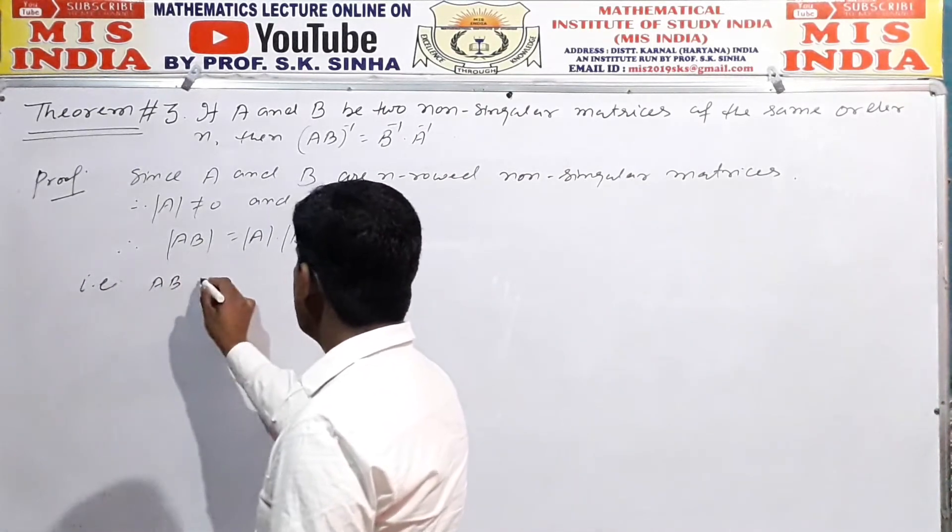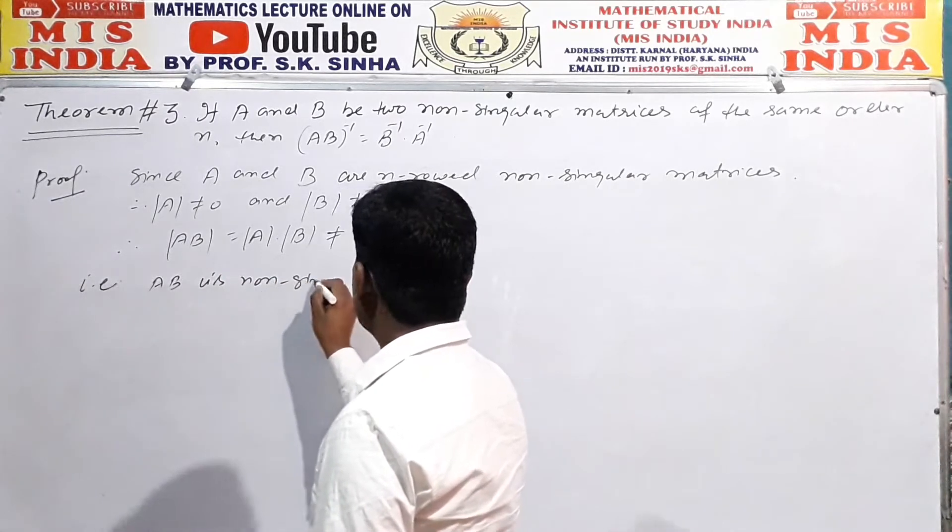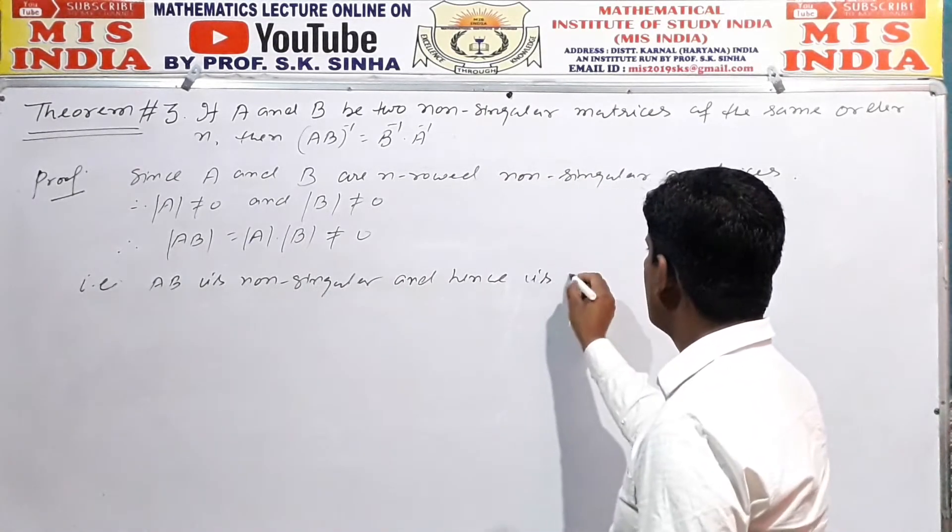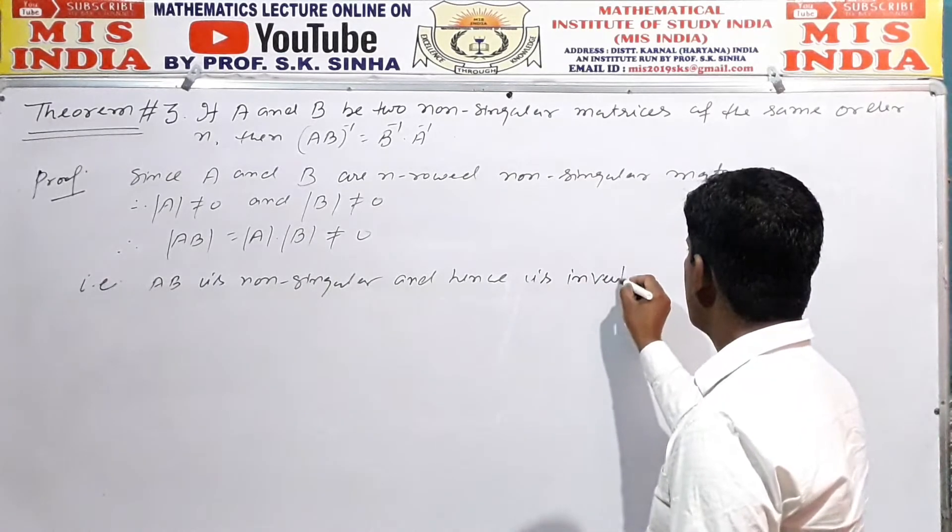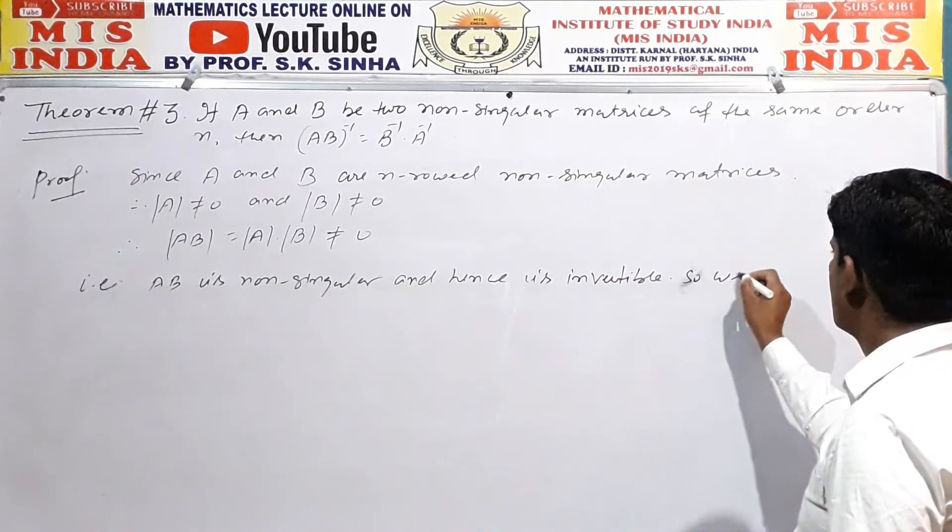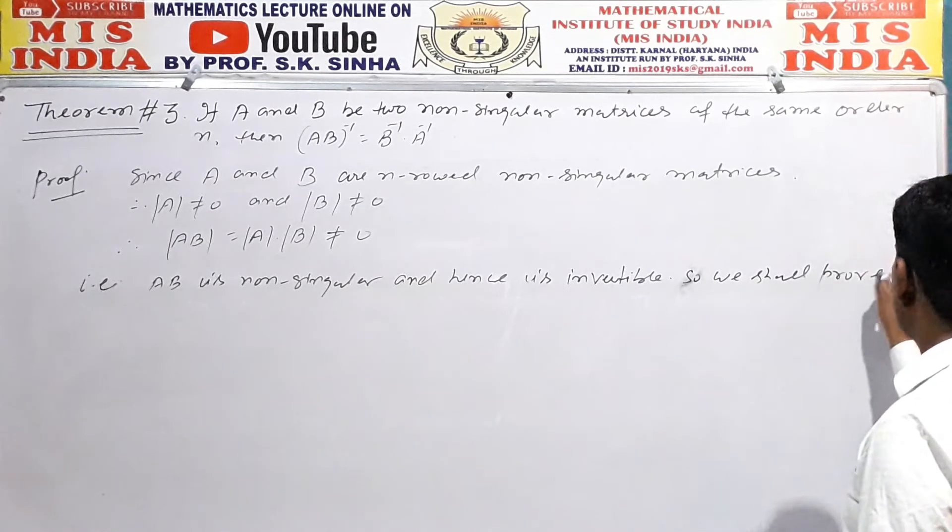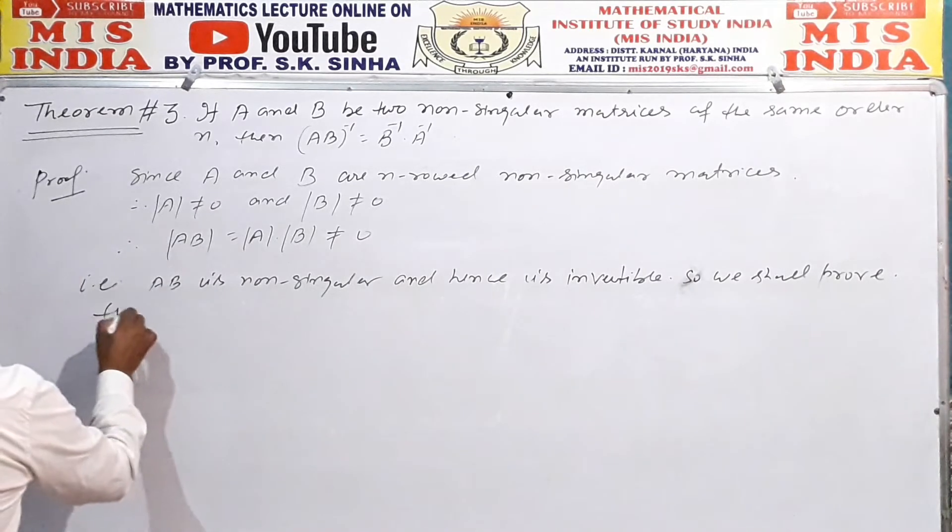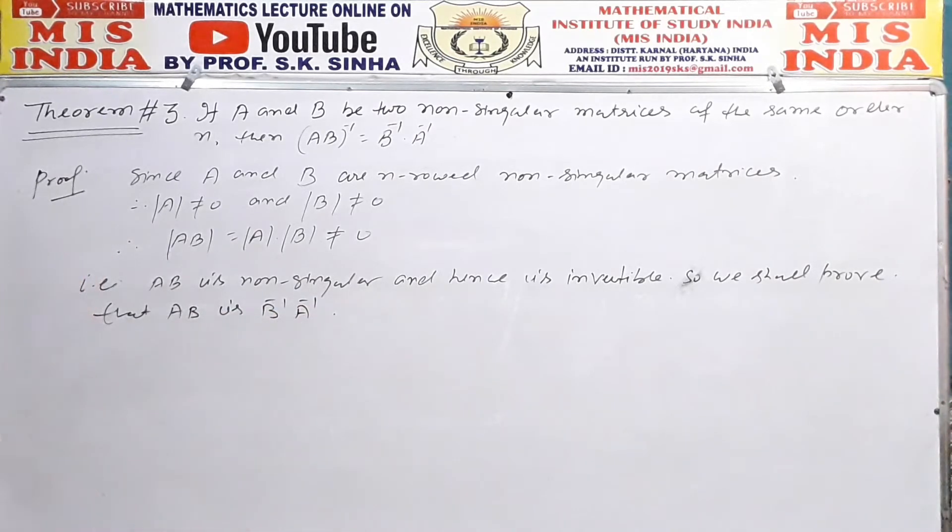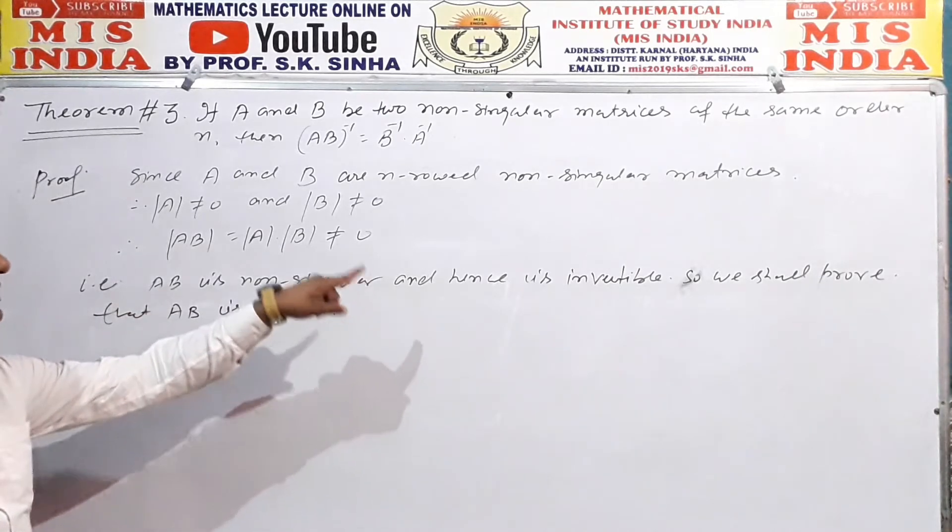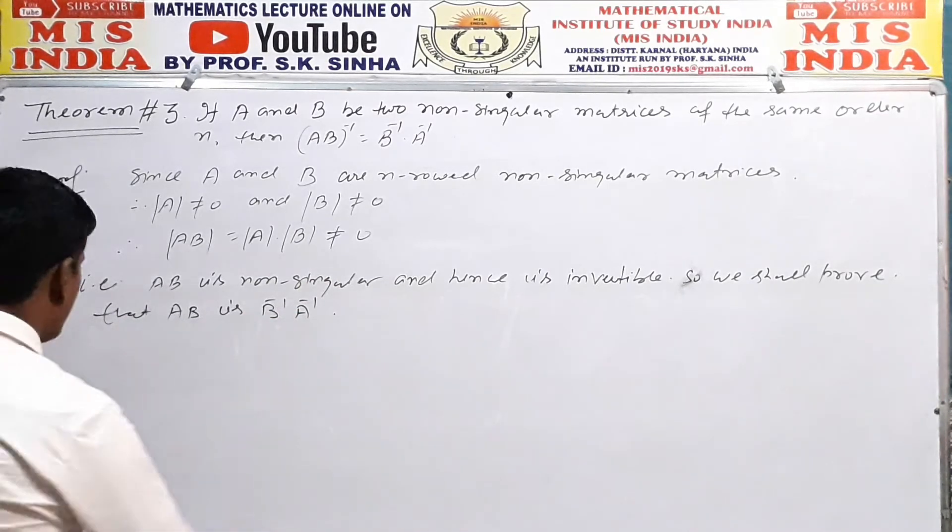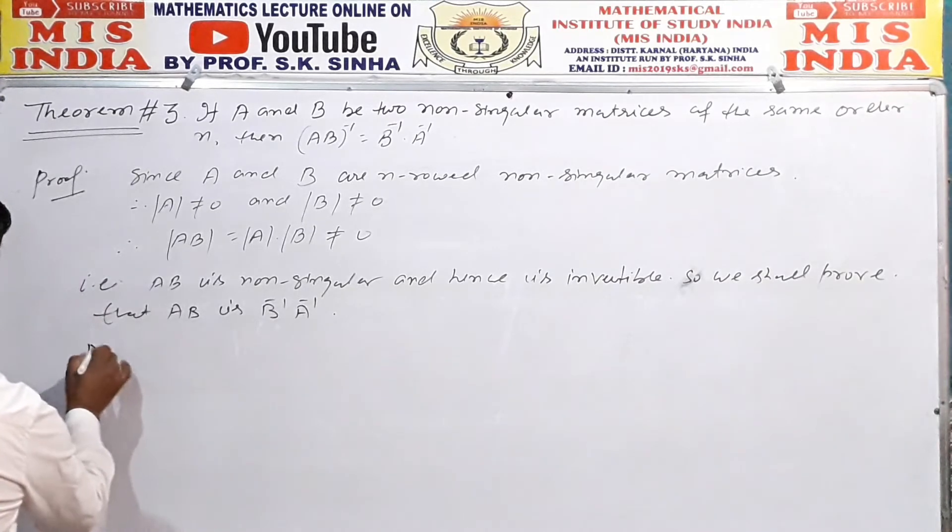We shall prove that AB inverse equals B inverse A inverse. Now, since AB is non-singular and hence is invertible, we shall prove that AB inverse is B inverse A inverse.